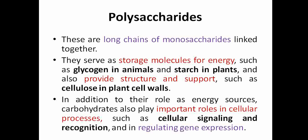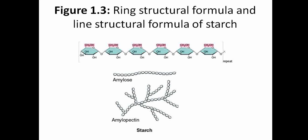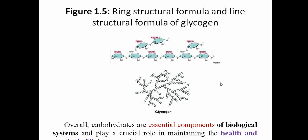In addition to their role as energy sources, carbohydrates also have important roles in cellular processes such as cellular signaling — for example, in muscle contraction, muscle relaxation, and signals from the brain. They are also involved in cell recognition and in regulating gene expression. Polysaccharides like starch, cellulose, and glycogen can be represented in both structural and line structural formulas. Overall, carbohydrates are essential components of biological systems and play a crucial role in maintaining health and survival of living organisms.